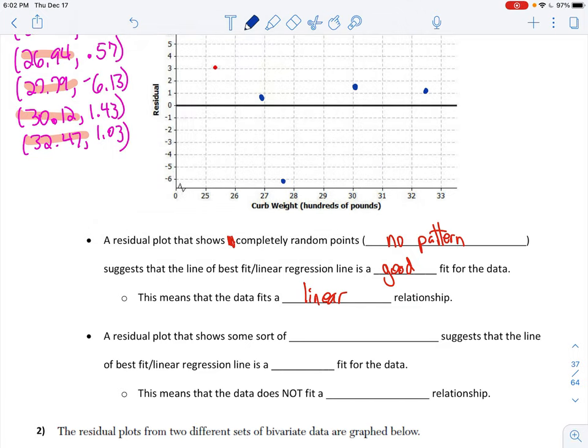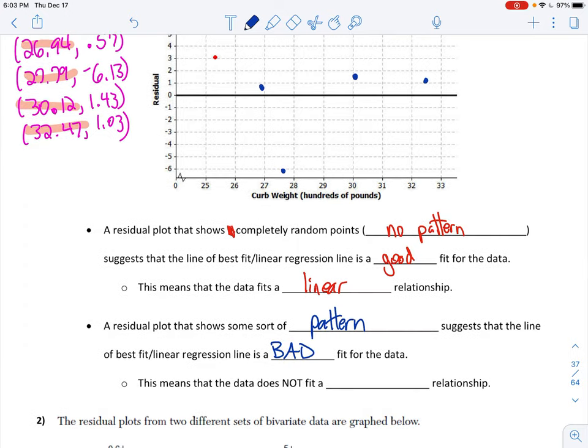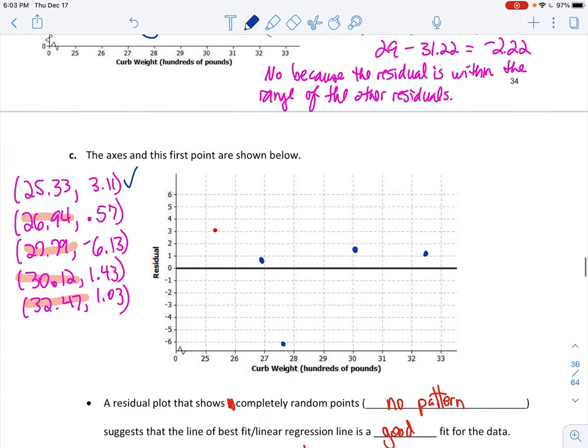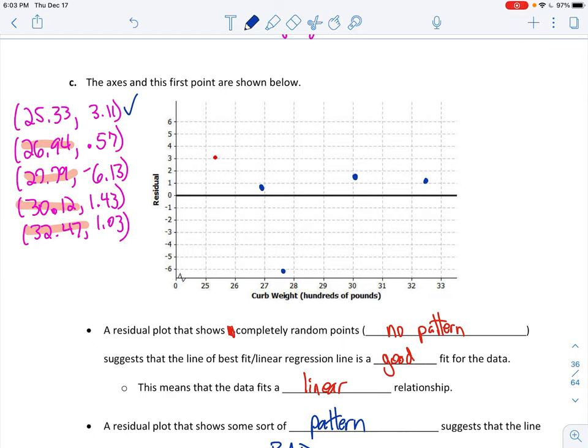A residual plot that shows completely random points, meaning that there's no pattern whatsoever to those dots that we just plotted, suggests that the line of best fit or the linear regression is a good fit for the data. This means that the data fits a linear relationship. So when none of these points look like they're making any type of pattern, that means that's a good fit. You don't want a pattern. However, if the data plot shows some sort of pattern, suggests that the line of best fit or the linear regression is a bad fit for the data. That means the data does not fit a linear relationship. If you remember, in the front, here was our graph, our line of best fit. That's a pretty straight line. You got one little outlier down here, but the majority of those points are real close to the line. So when you look at your residual plot, you see there's absolutely no pattern to those dots, which makes it a good fit. It was a good linear relationship.